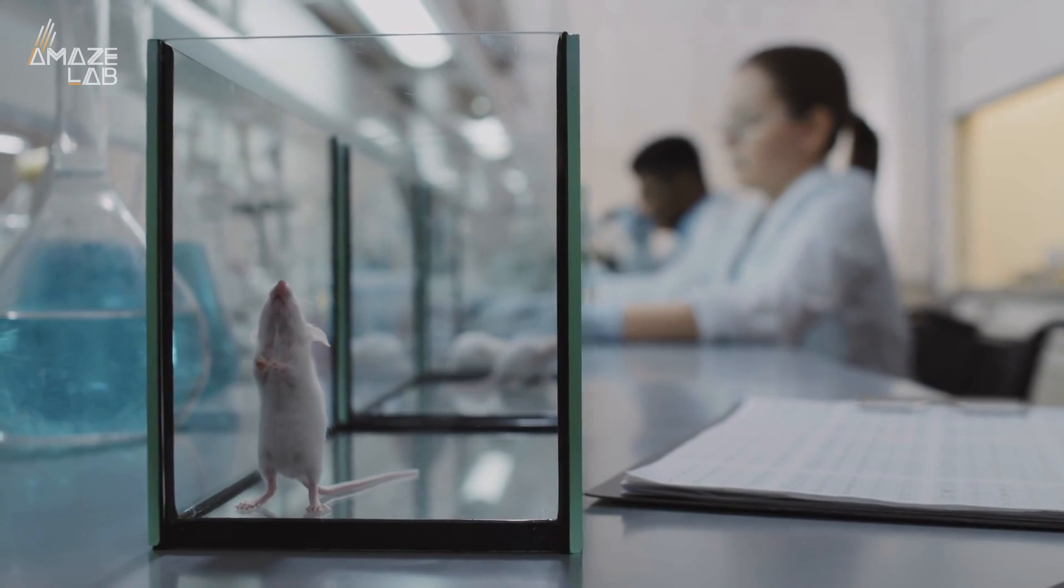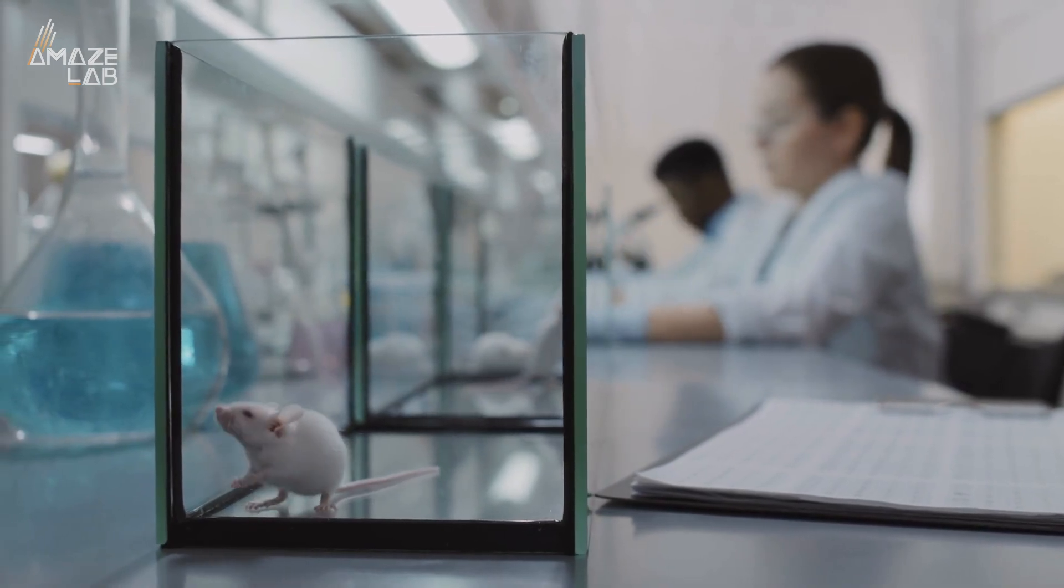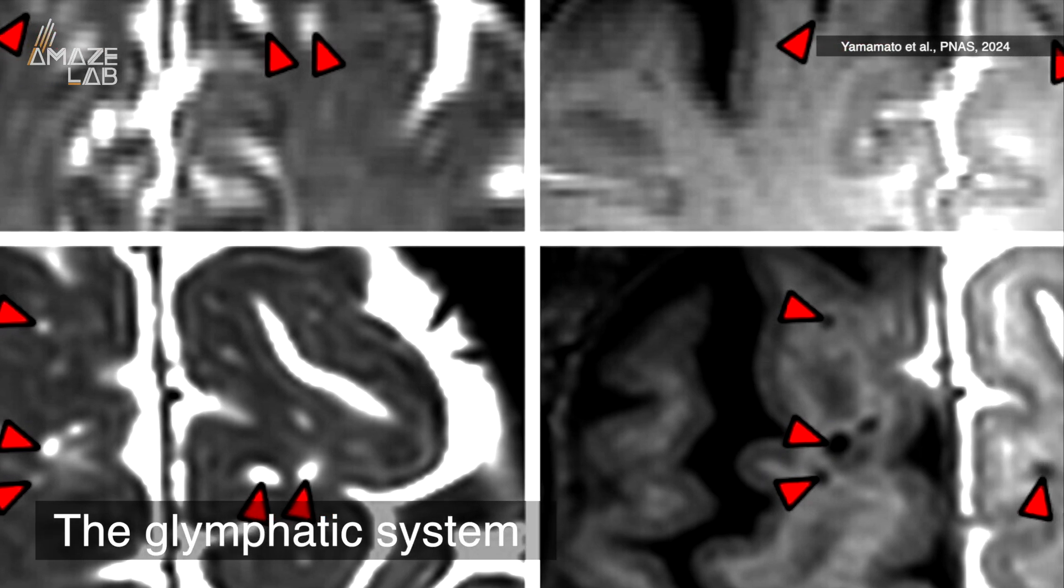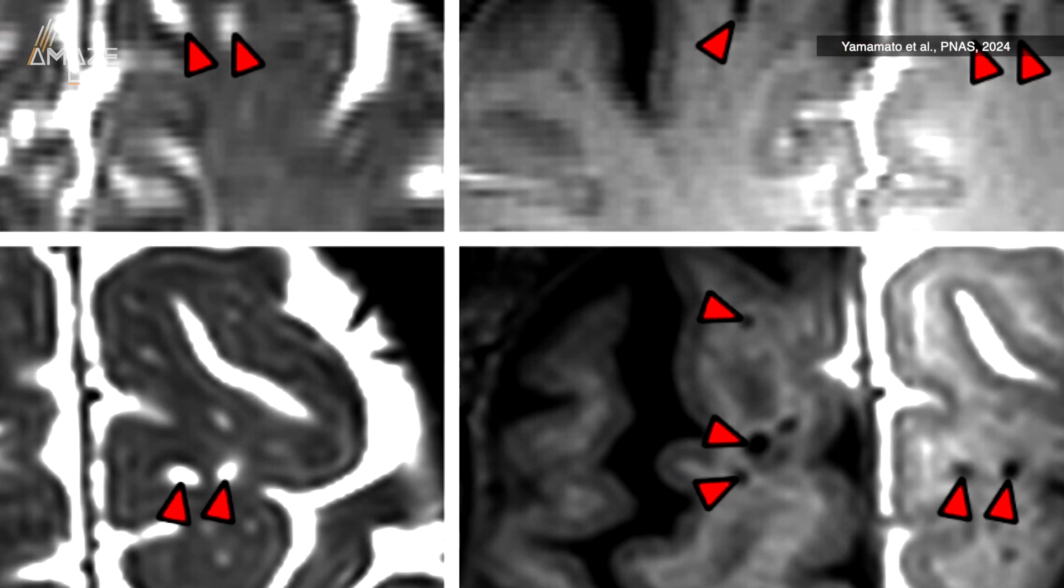This system has been observed in mice before but only theorized in humans—that is, until now. Experts have named the waste removal method the glymphatic system, and for the first time they have mapped exactly how it works in human brains.